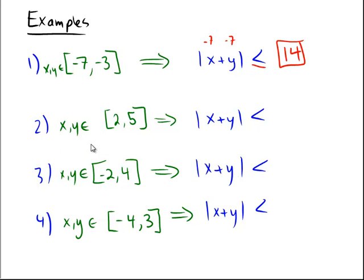What if both the numbers were positive, like in the second case, where x and y are taken from the interval 2 to 5? Well, now the biggest value x could ever take on would be like 5 on the right, and y could be very close to 5 also, so we'd end up getting a bound here of being less than or equal to the value of 10.